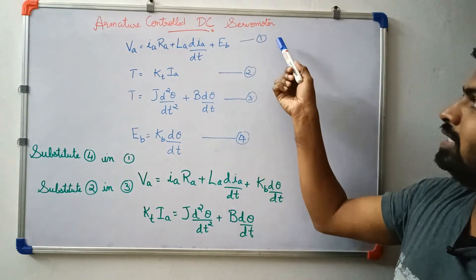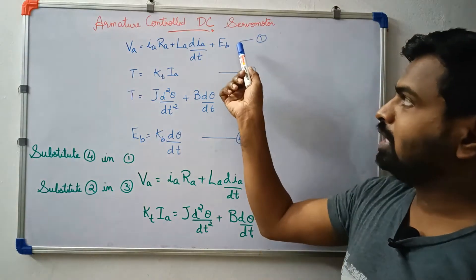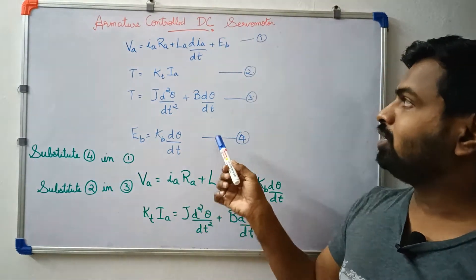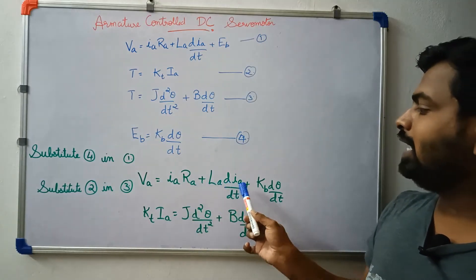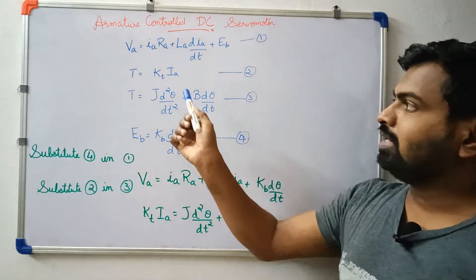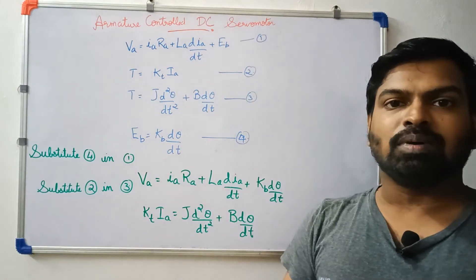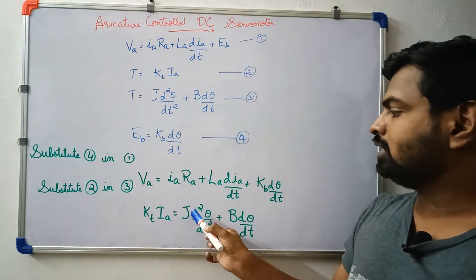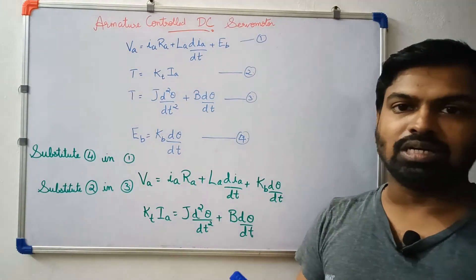Now we have the equations. We substitute the back EMF. This gives us: LA times dIA/dt plus KB times dθ/dt. Then we substitute the torque equation: Kt times IA equals J times d²θ/dt² plus b times dθ/dt. So we have two equations.